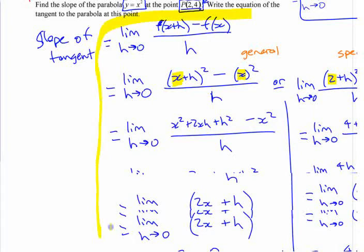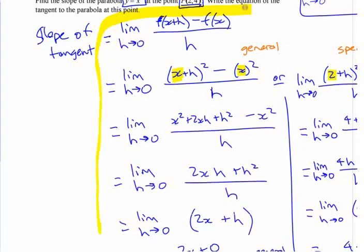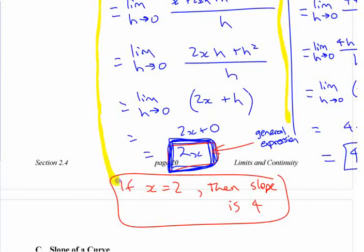What I basically just wrote out here for you in general, this is the definition of what's called the derivative. The derivative is a function that is the slope of another function, the tangent line.